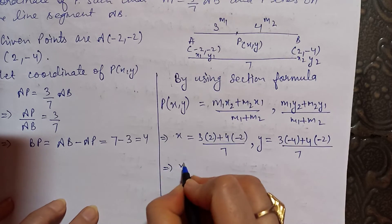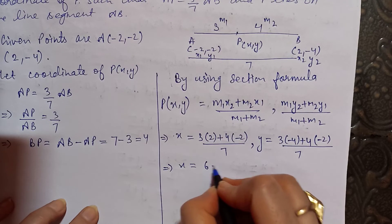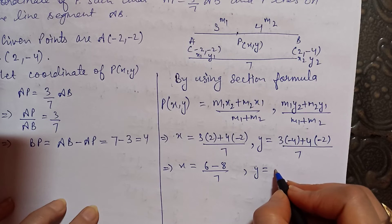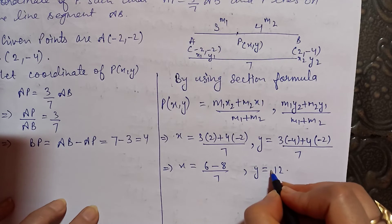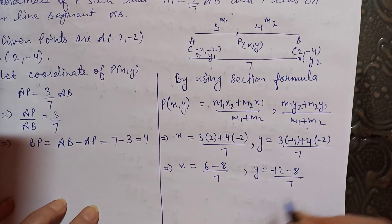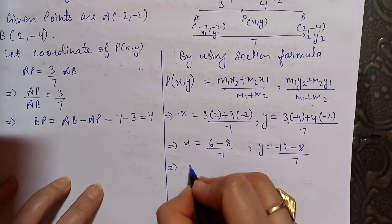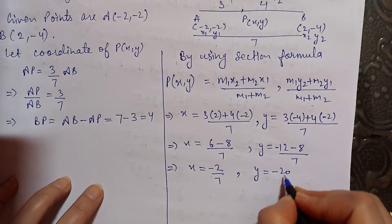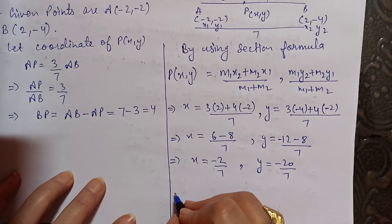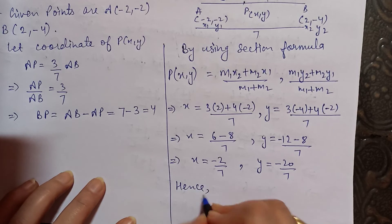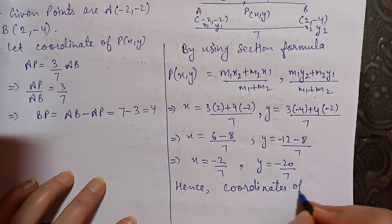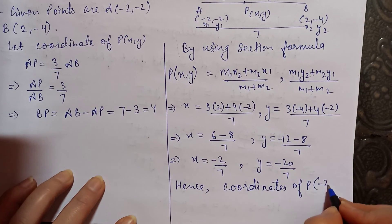X = (3×2 + 4×(-2)) / 7 = (6 - 8) / 7 = -2/7. Y = (3×(-4) + 4×(-2)) / 7 = (-12 - 8) / 7 = -20/7. Therefore, the coordinates of P are (-2/7, -20/7).